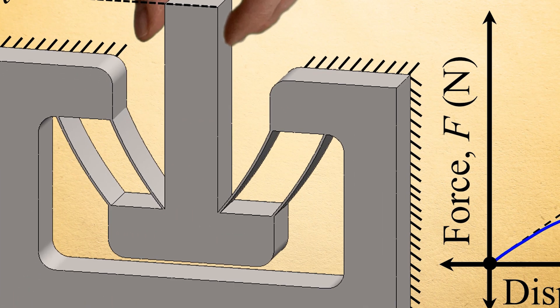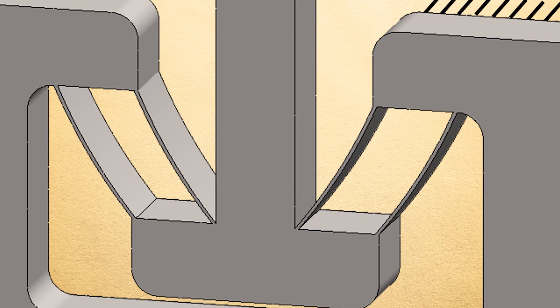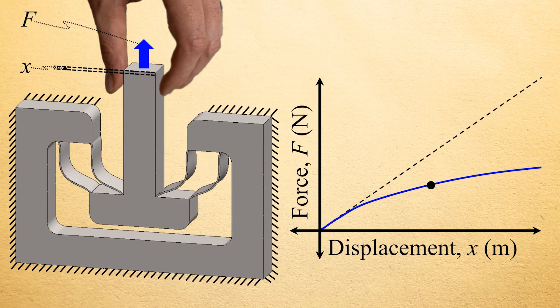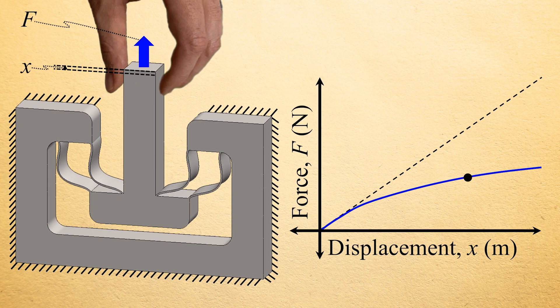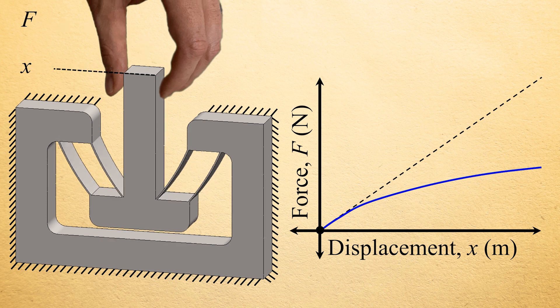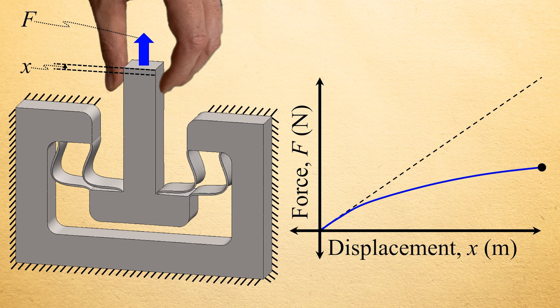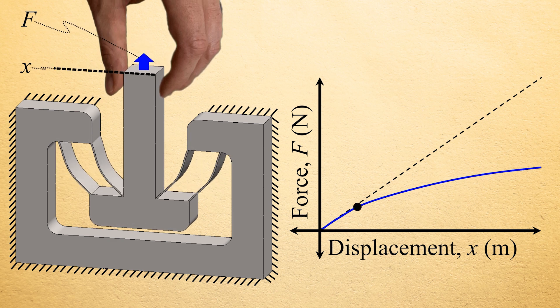Although most springs tend to stiffen as they are deformed, some springs can be designed to decrease their stiffness and become more compliant as they are deformed. This example uses four slightly curved blade flexures that begin stiff in their initial near-straight configuration. As the spring is loaded, however, its stiffness gradually decreases in a non-linear way as the spring's blade flexures begin to curve more and more as they buckle and lose the ability to constrain the spring's shuttle.